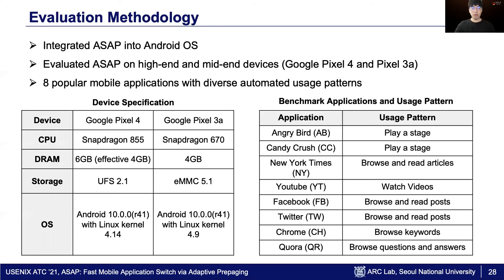For evaluation, we implemented and integrated ASAP into Android OS, and evaluated on Google Pixel 4 and Google Pixel 3a. Their specs are shown in the left table. We selected eight popular mobile applications as benchmarks for switching latency.